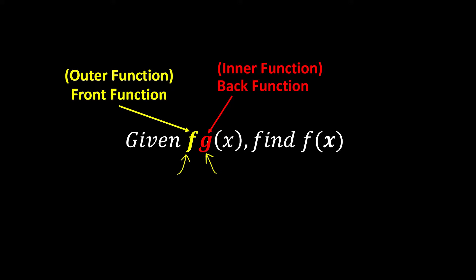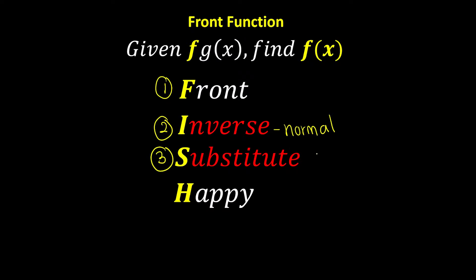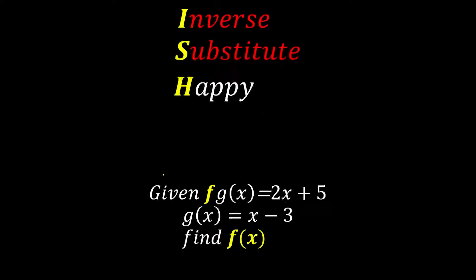First, we're going to see how we can find the front function using a simple method we call FISH — F-I-S-H. Whenever they ask us to find the front function, we use the FISH method. The steps are: first verify whether we are finding the front function, then inverse the normal function, then substitute our answer from step two into the composite function, and then we are done — happy!